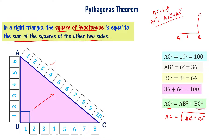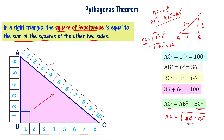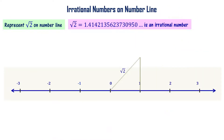Now applying this to our triangle: AB = 1 unit, BC = 1 unit. So AC = √(AB² + BC²) = √(1² + 1²) = √(1 + 1) = √2. Therefore the length of AC is √2 units.